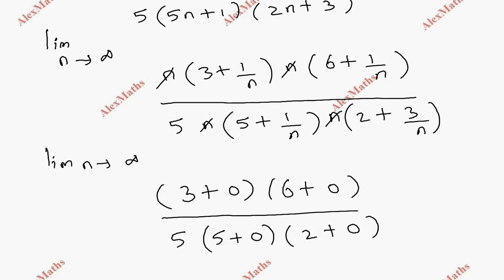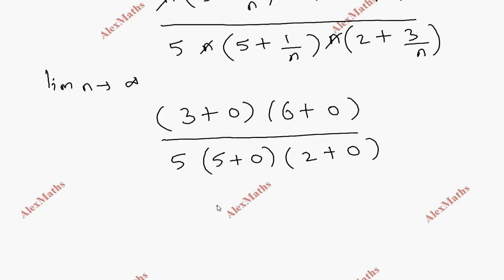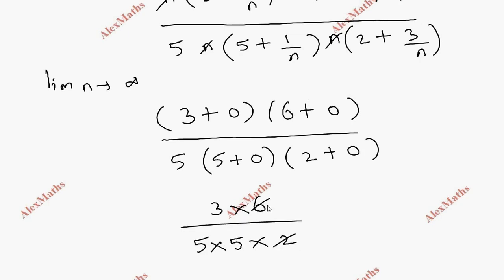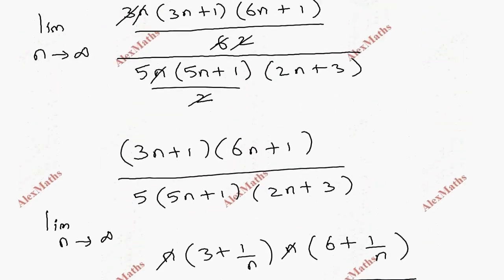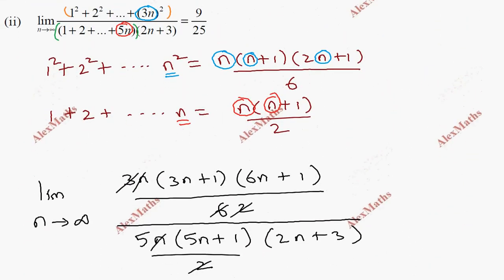So the numerator is 3 × 6 = 18, and the denominator is 5 × 5 × 2 = 50. That gives 18/50, which simplifies to 9/25. So the answer to the limit is 9/25.